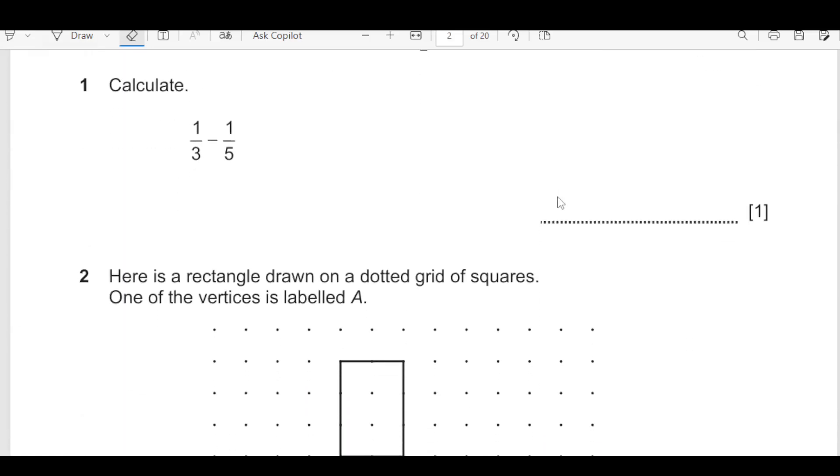As you can see, we have here 1 over 3 minus 1 over 5. For that we have to take the LCM. So LCM is 15. Now this should be made the same as 15. So 5 times 3 is 15. 3 times 5, I am going to multiply by 5 here.